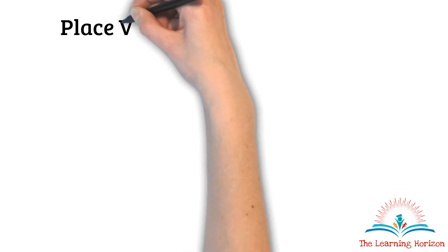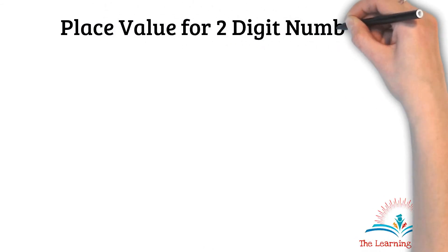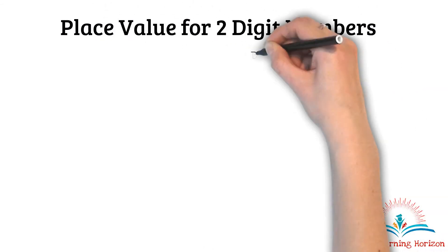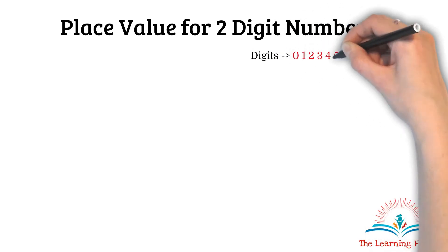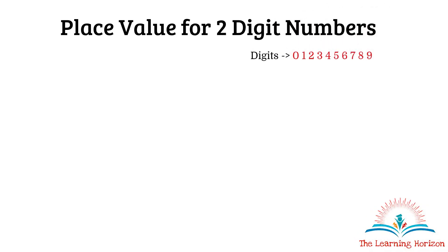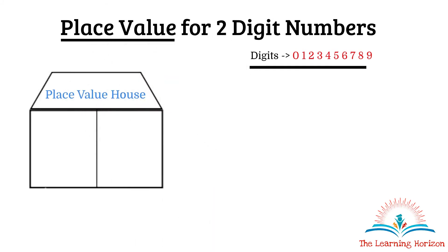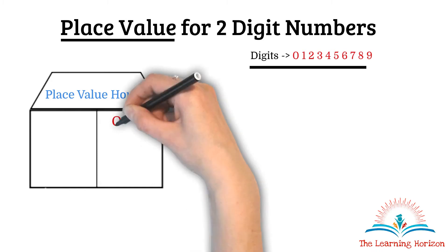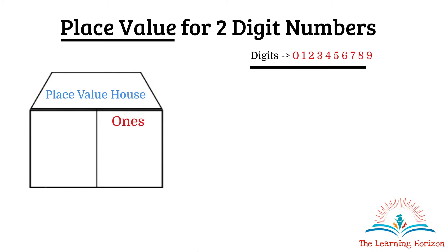Now let us understand the concept of place value for two-digit numbers. There are 10 digits in math, and any number can be formed with just these 10 digits because of a concept called place value. This is our place value house for a two-digit number — this house has a place for ones and a place for tens.